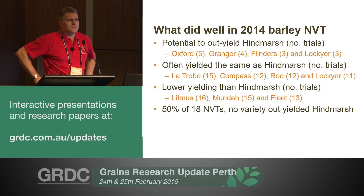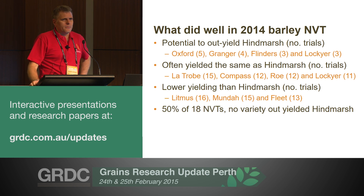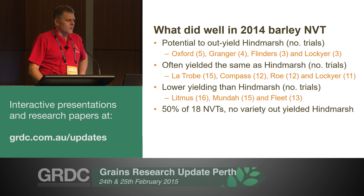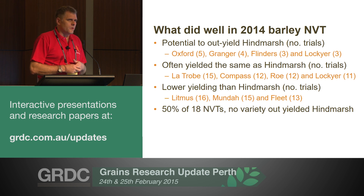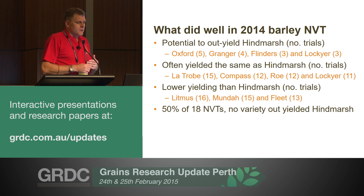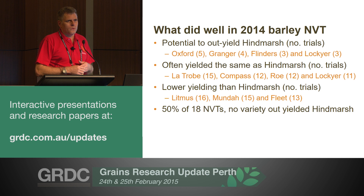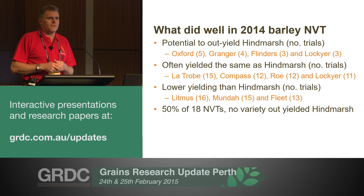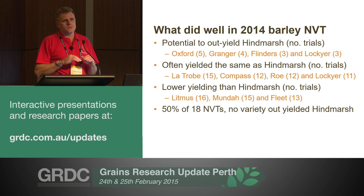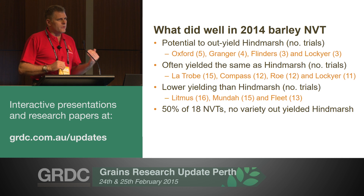Looking back at 2014, there were only 18 NVTs harvested. A number of varieties out-yielded Hindmarsh: Oxford in five of the 18 trials, Granger in four, Flinders in three, and Lockyer in three. Varieties that yielded the same as Hindmarsh were Latrobe in 15 sites, Compass in 12, Roe in 12, and Lockyer in 11. Litmus, Munda, and Fleet didn't perform well. Importantly, in nine of the 18 trials, no variety out-yielded Hindmarsh, which is why it remains the yield benchmark.